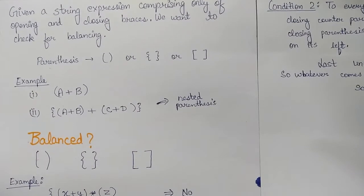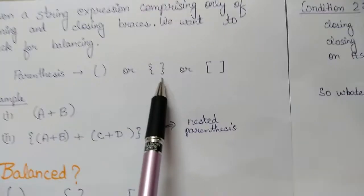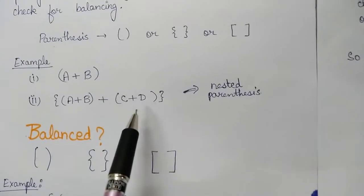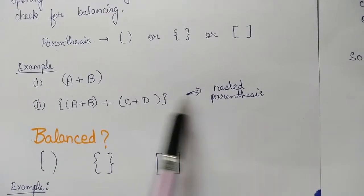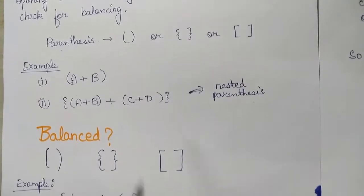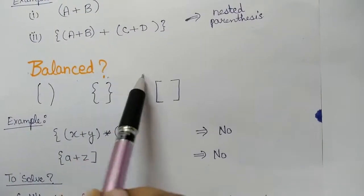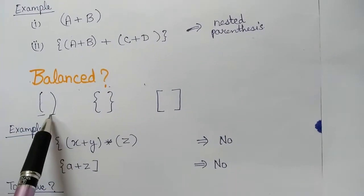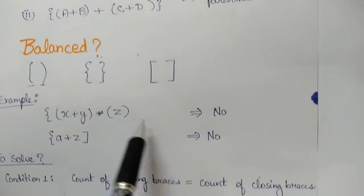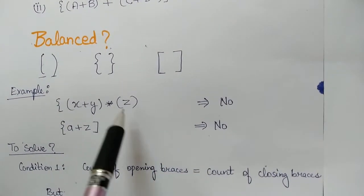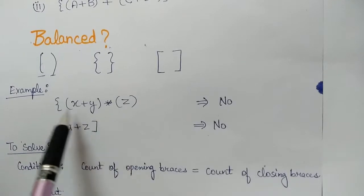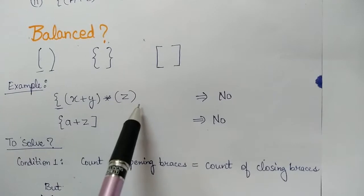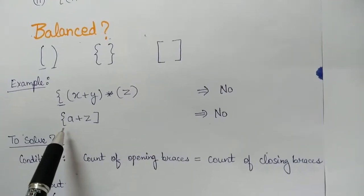Whenever I consider the word parenthesis, it also involves the curly braces as well as the square brackets. Here we have some examples of balanced parenthesis, including an example of nested parenthesis. So first we need to know what a balanced parenthesis is. Balanced parenthesis means that for every opening brace there will be a closing brace. Here we also have some examples — this is not a balanced parenthesis because the curly brace doesn't have any closing brace throughout the expression.